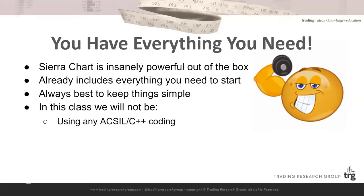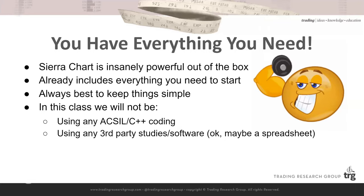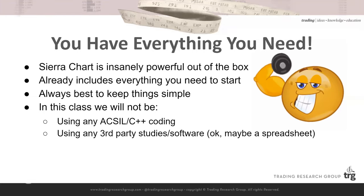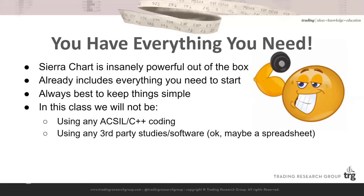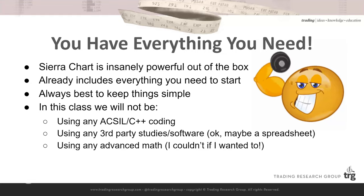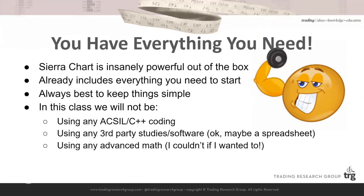In this course, we are not going to be doing any C++ or ACSIL coding at all — not going to talk about it, not going to use it. We're also not going to use any third-party studies or software. We will use a spreadsheet — Google Sheets is my personal favorite, but Excel, OpenOffice, LibreOffice, any spreadsheet will do — for data analysis, looking at results of these bots to figure out where we need to improve. We're also not going to be using any advanced math. I couldn't use advanced math if my life depended on it. This is going to be very elementary math at most.